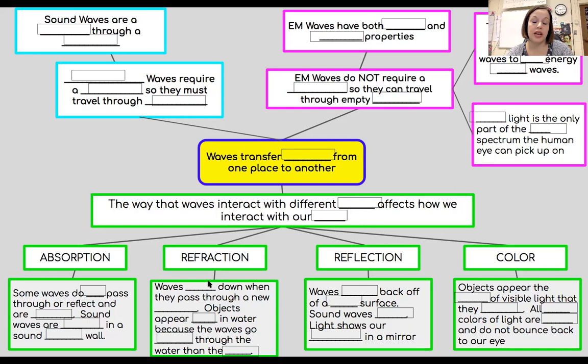I left out a couple boxes. I'll fix that before I submit it to you guys. So waves, sorry, when we're talking about refraction, refraction is another property of waves, another way they interact. Waves slow down when they pass through a new medium. So we should have slow and medium there. Objects appear bent in water because the waves go slower through the water than the air. So we did those refraction videos and you saw like a pencil in water and it looked like it was bent. That's because, one more time, waves slow down when they pass through a new medium and objects appear bent in water because the waves go slower through the water than through the air. So that last box should be air.